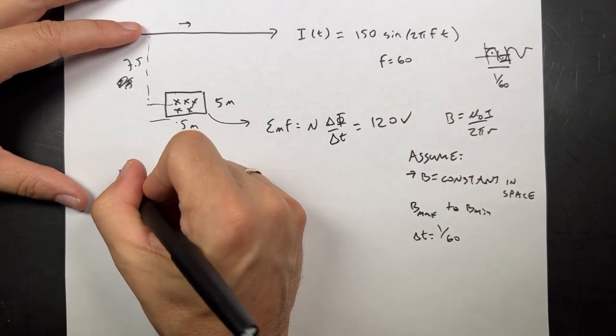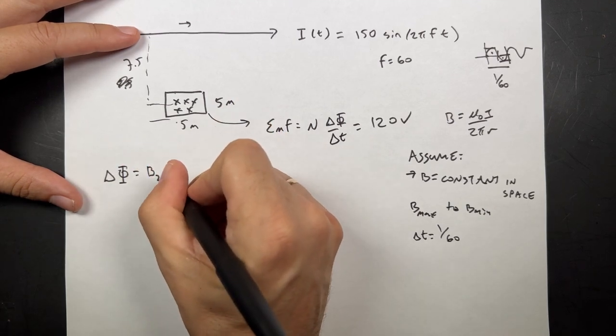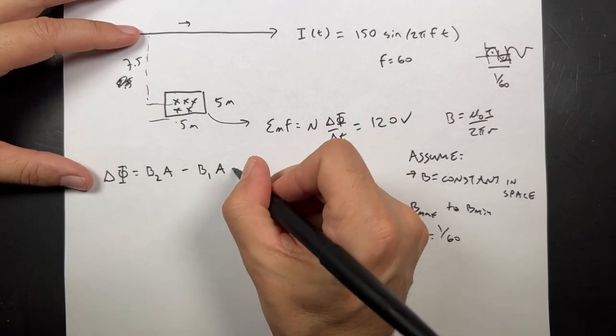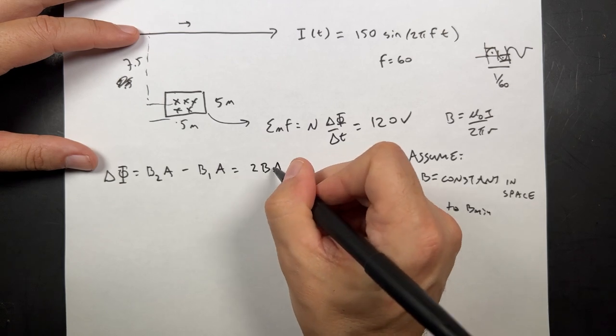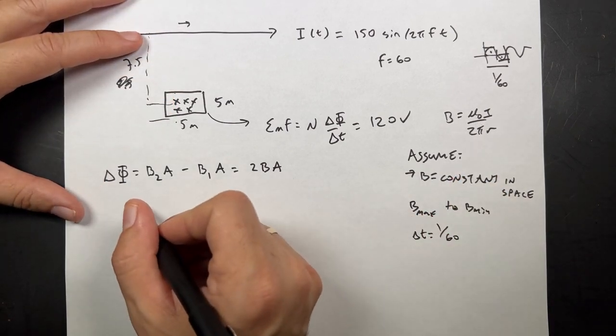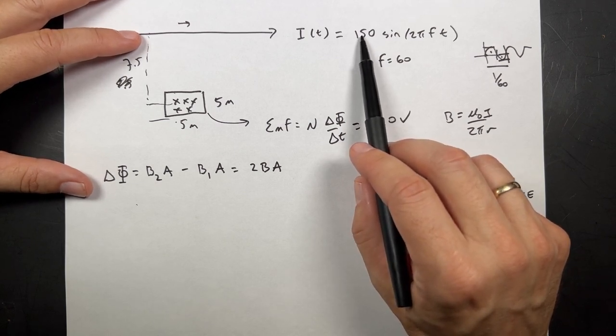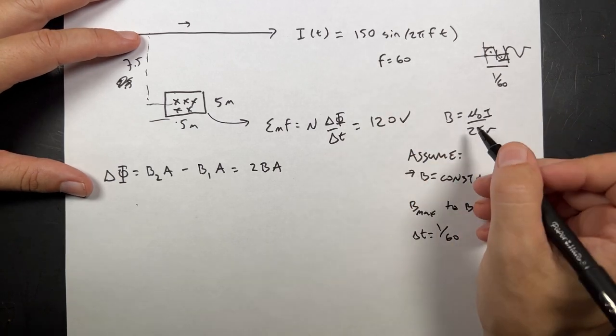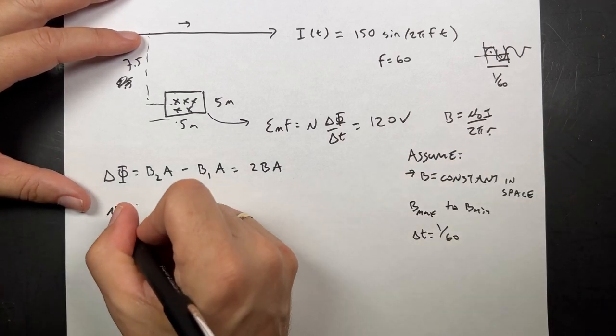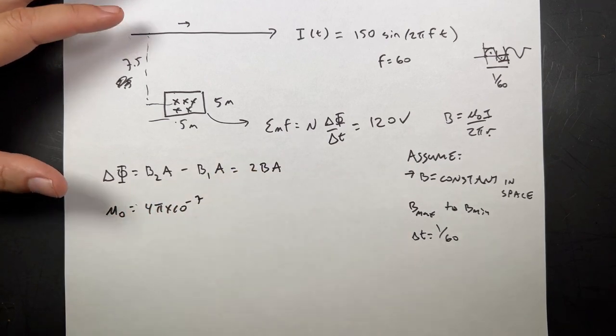And then I think that's it. I can do everything else. So, let's go ahead and get an expression for the flux. The delta flux is going to be b2 a minus b1 a. And b2 and b1 are in the opposite direction. So, the magnitude of this is going to be 2 b a. And the area is going to be 5 by 5. The magnetic field is this. So, I'm just going to put in the maximum current. It's not right. And you can make this much better. But it's not wrong. So, that's my current 150. R is 7.5. Mu naught. Remember, mu naught equals 4 pi times 10 to the negative 7th.